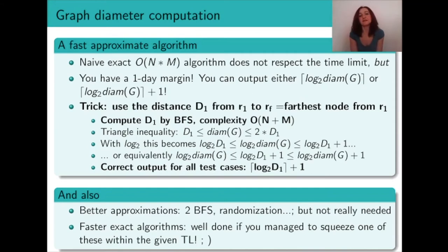It turns out that there is in fact a very simple way of approximating a graph's diameter by simply computing the distance d1 from r1, which is the first node in our graph, to the furthest node from r1 in our given graph. And this distance d1 we can compute by a very straightforward basic breadth-first traversal with complexity n plus m, so much faster than the previous n times m.